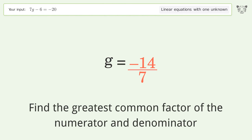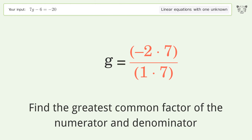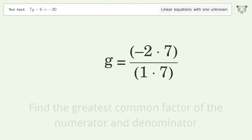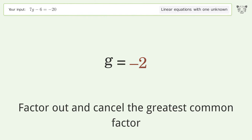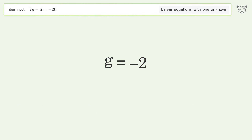Find the greatest common factor of the numerator and denominator. Factor out and cancel the greatest common factor. And so the final result is g equals negative 2.